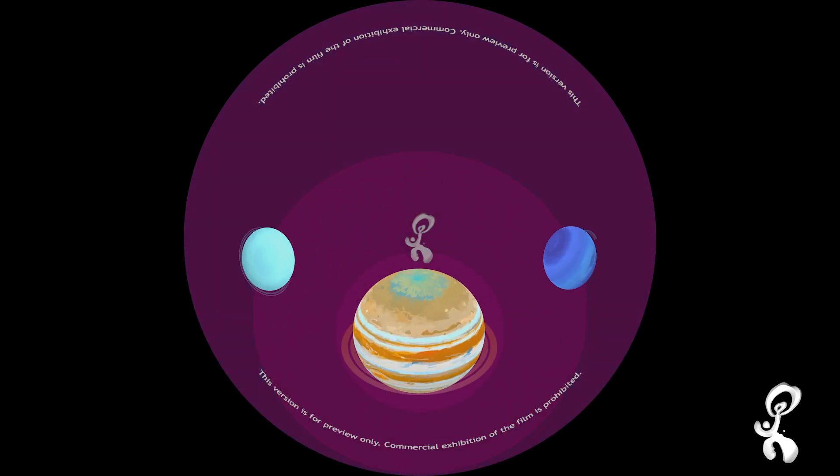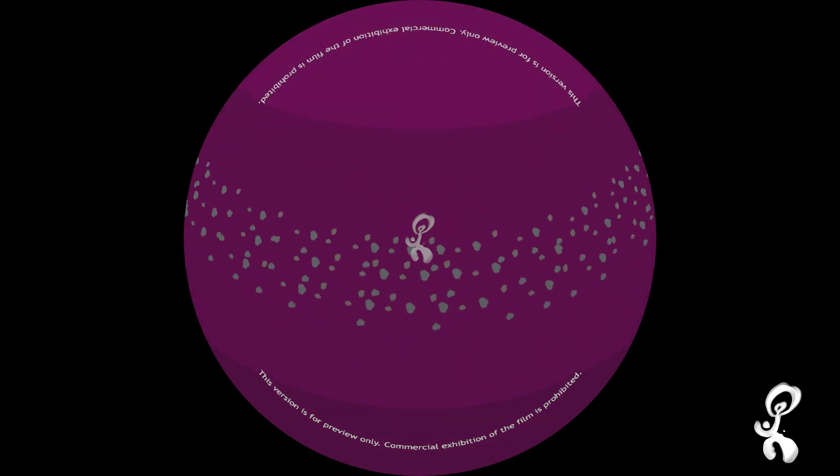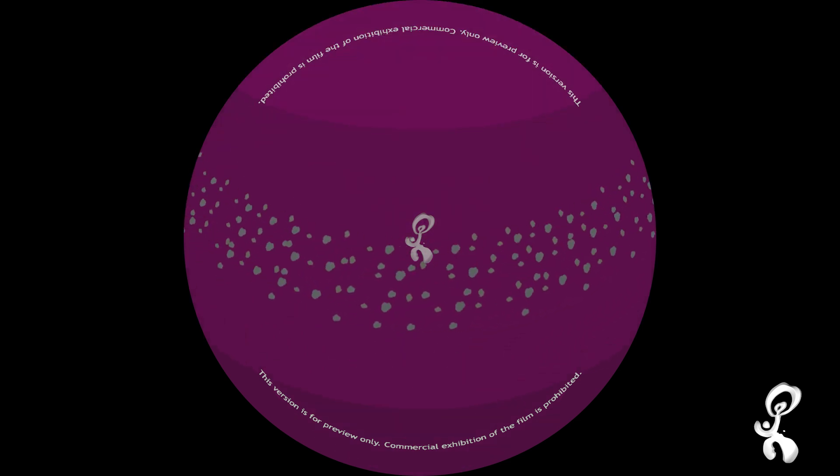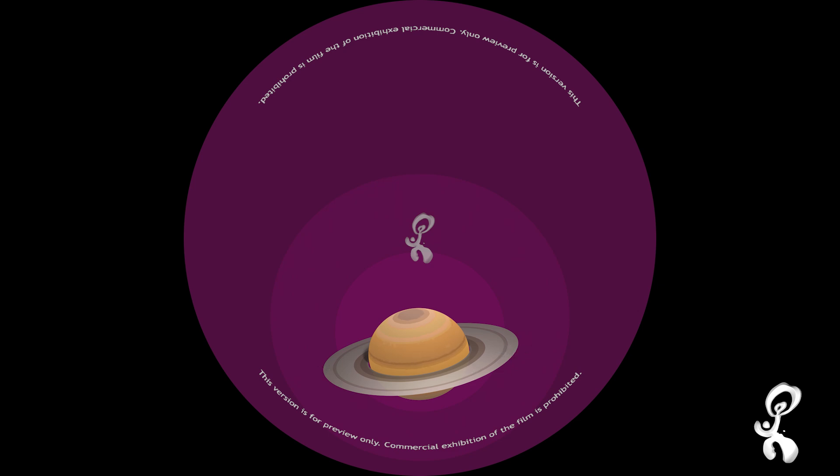Also, all gas giant planets have beautiful rings made of really tiny icy rocks. Of course, no one can beat the mind-blowing rings of Saturn.